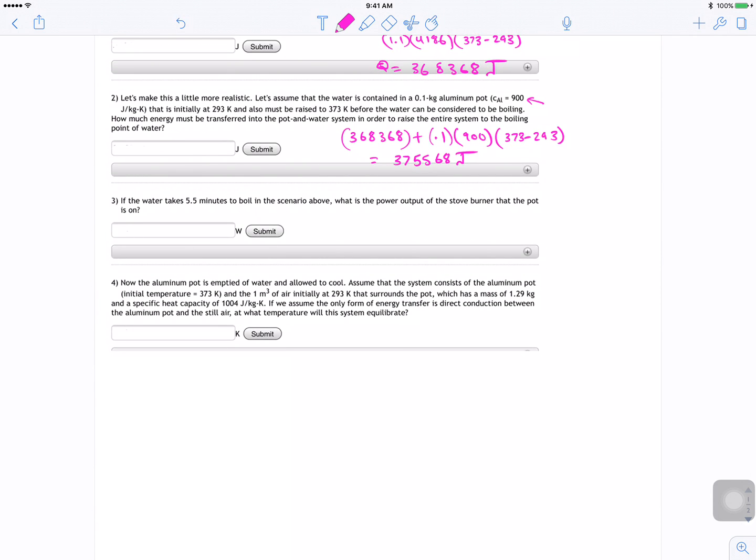So now if the water takes 5.5 minutes to boil, what should be the watts, what should be the power? So we know watts is equal to joules per second. Okay, so now it's just the way I think of it is just making units work to get joules per second.